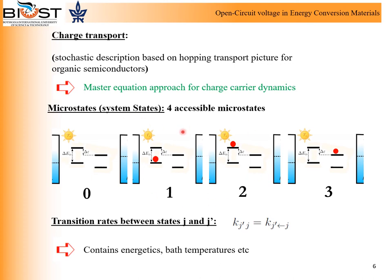The figure here shows the four accessible system states reflecting the charge transport in an energy landscape. The system dynamics is modeled by a master equation accounting for the time evolution of population probabilities, with the population probabilities fulfilling normalization at all times. In this stochastic approach, the processes underlying the device operation are described as transitions between microscopic system states. The transition rates contain physical parameters like temperature or energy levels and are the link to the thermodynamics.